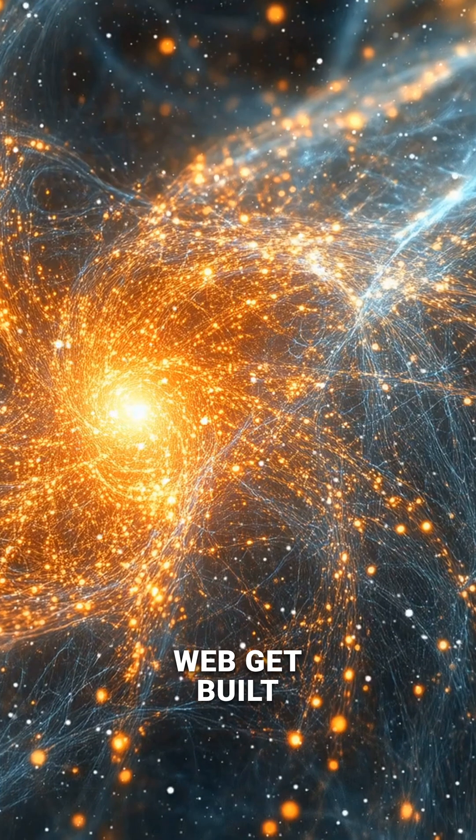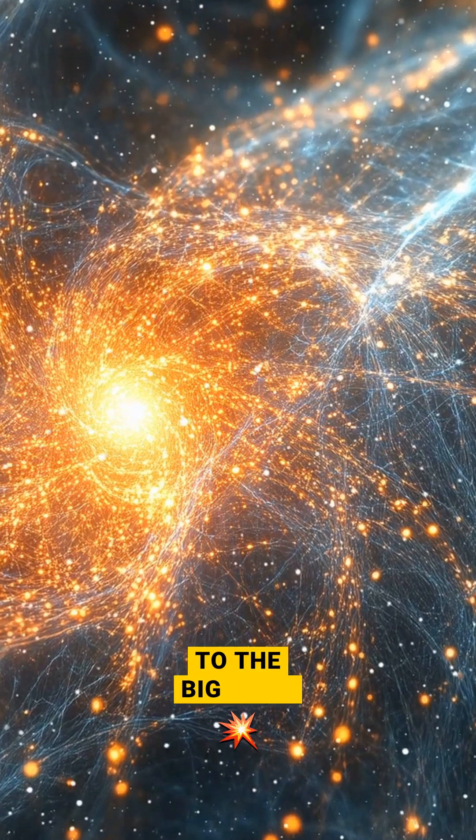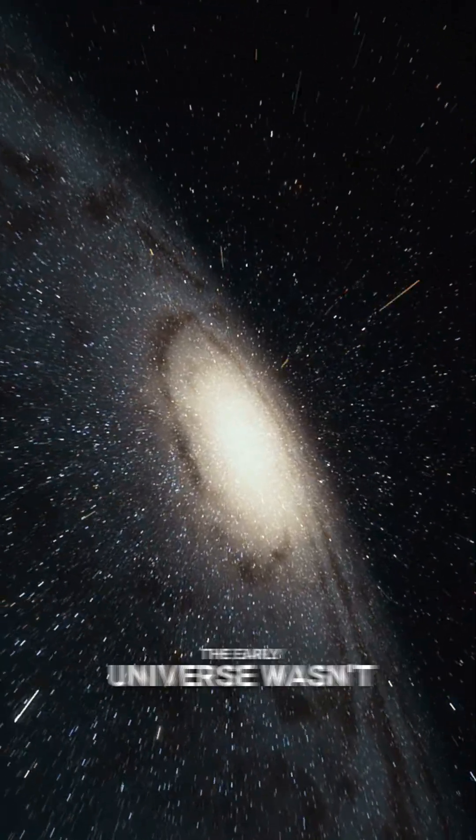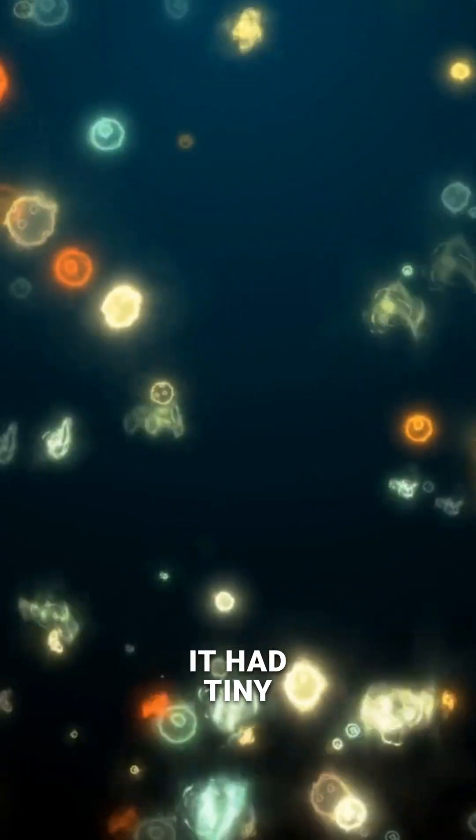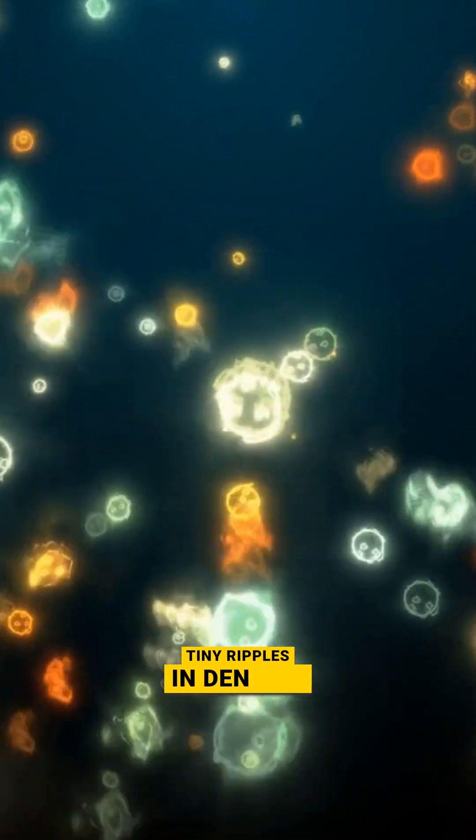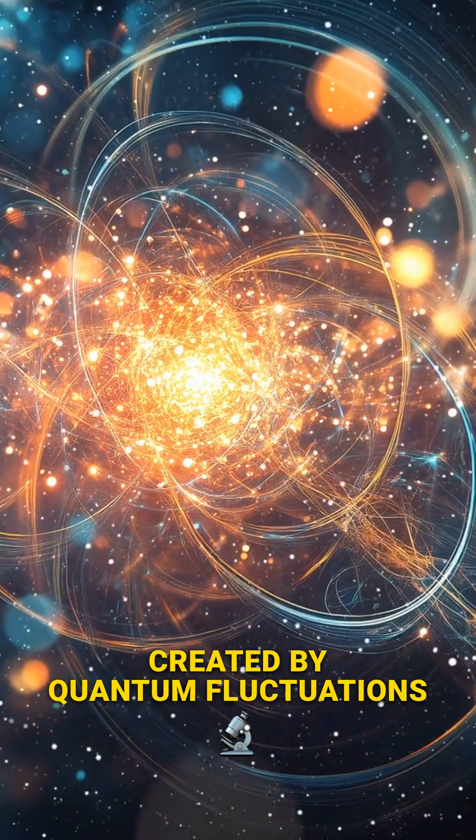So how did this web get built? It all goes back to the Big Bang and dark matter. The early universe wasn't perfectly smooth. It had tiny, tiny ripples in density, created by quantum fluctuations.